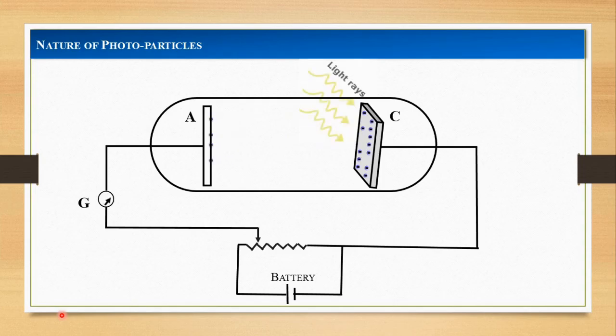The battery maintains the potential difference between plates A and C that can be varied with the help of this rheostat. The polarity of the battery between C and A can be reversed. Thus, the plate A can be maintained at desired positive or negative potential with respect to the emitter C. When the electrons are attracted towards the anode A, it shows the deflection in the galvanometer.